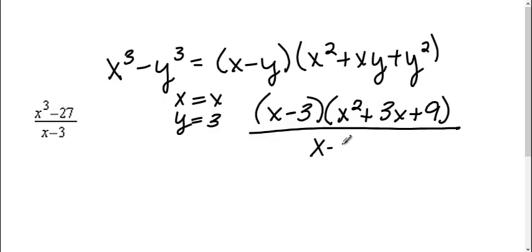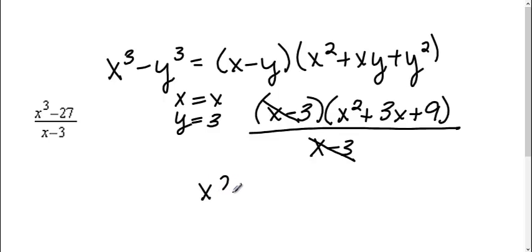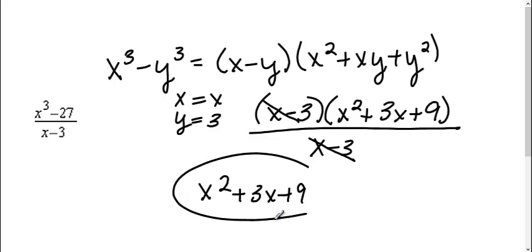On the bottom, I still have x minus 3. Now that I've simplified, I can start crossing stuff off. I see an x minus 3 and an x minus 3. Therefore, my final answer is going to be x squared plus 3x plus 9.